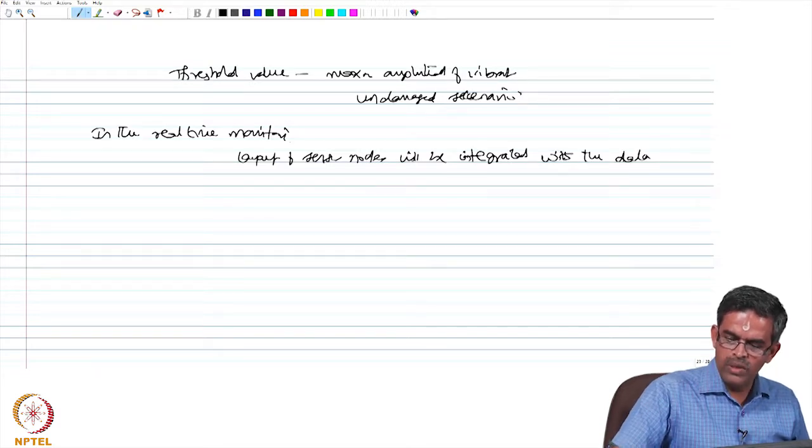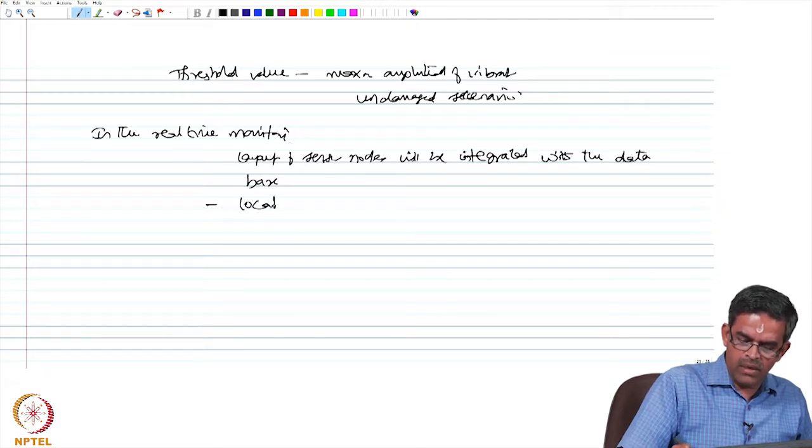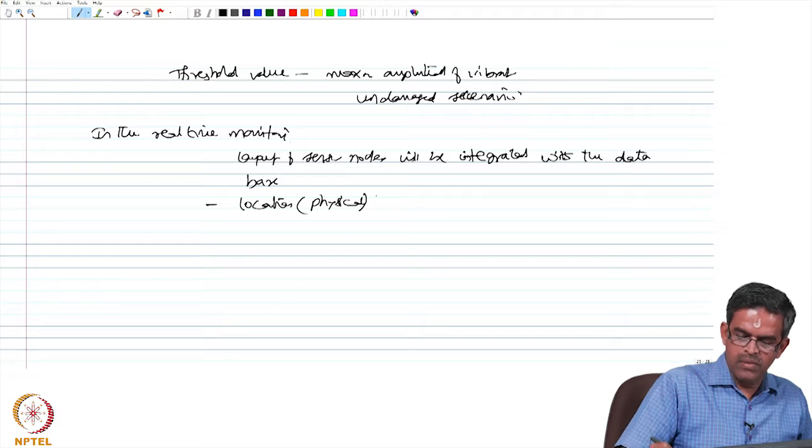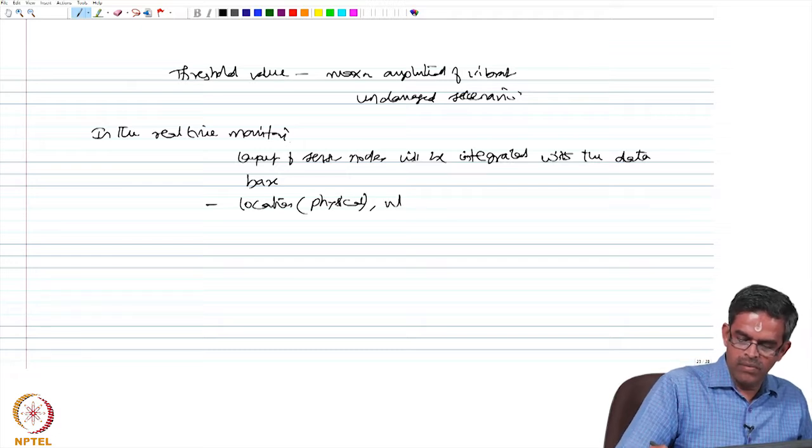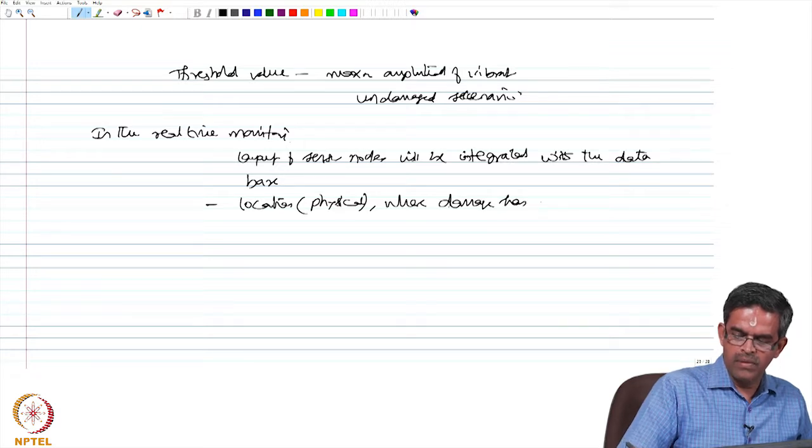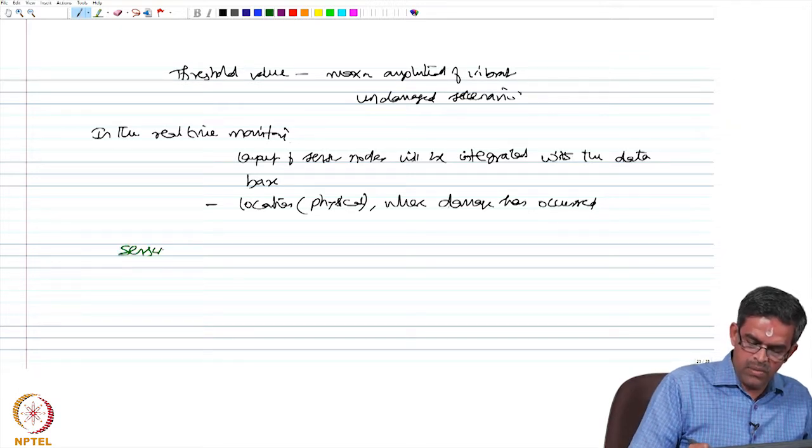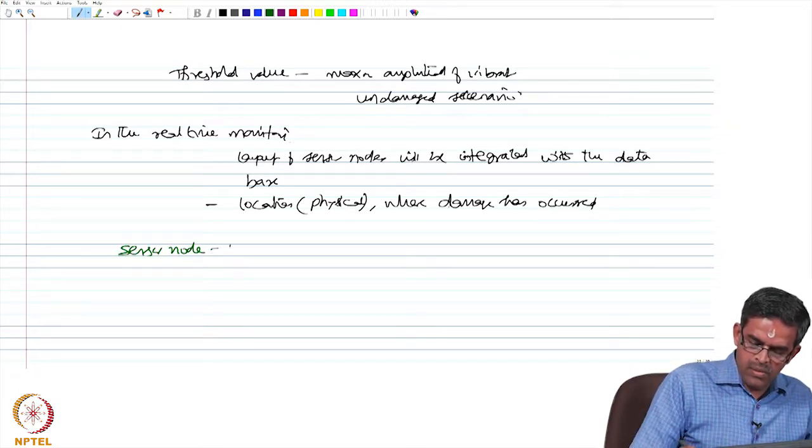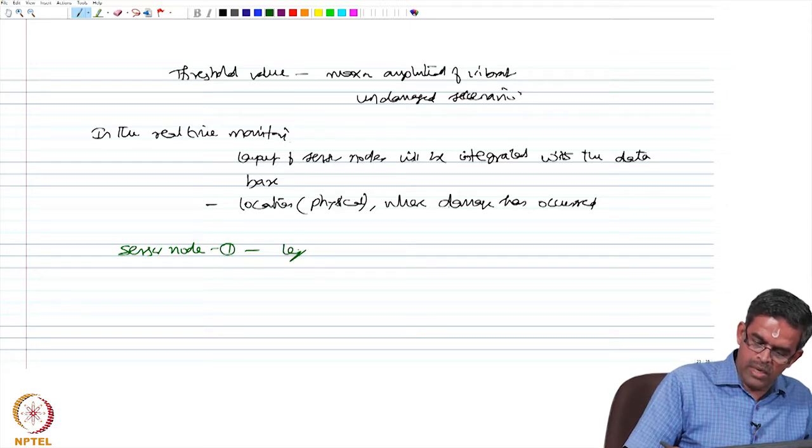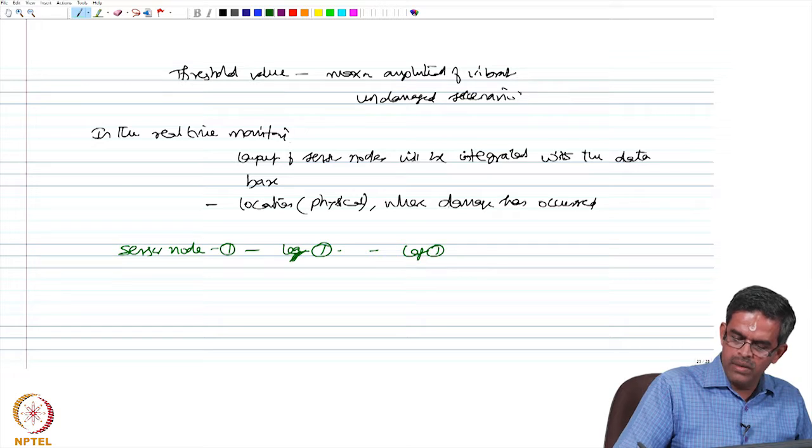One will also know exactly at what location the damages occur, physical location where damages occur from the report. For example, let us say sensor node 1 corresponds to let us say leg 1, so one can say that leg 1 is damaged.